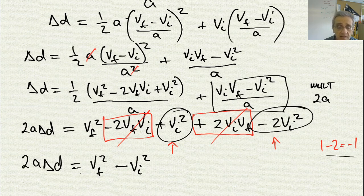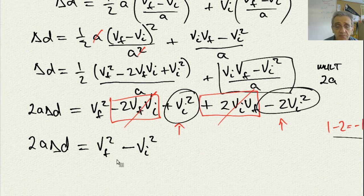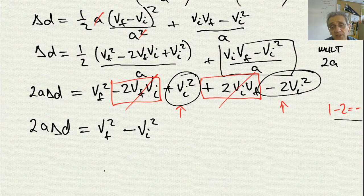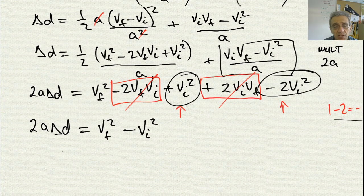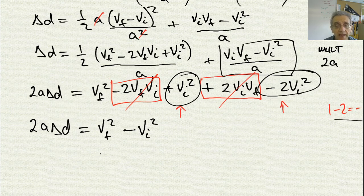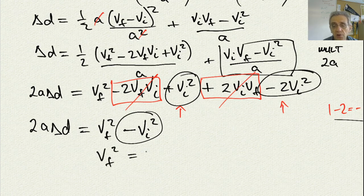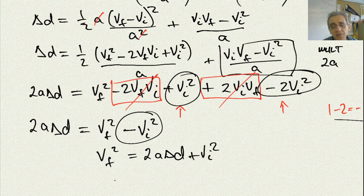So, now that we have this equation, it looks much simpler, but we can actually want to change it one last time. And what I'll do is I'll just move this term to the other side of the equal sign, and I'll solve for v-f squared is equal to 2a delta d plus vi squared.